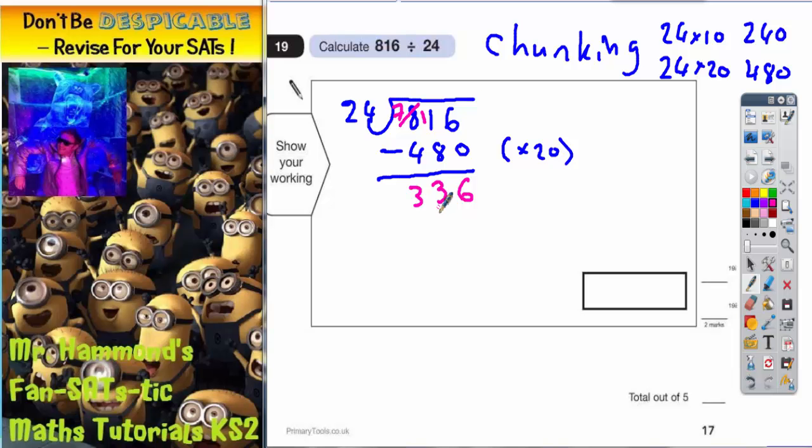Okay, so now I need to subtract some more chunks of 24. Now I can't do 20 lots of it this time because I've only got 336 left and 480 is too big, but I can do 10 lots, so let's now subtract 10 lots. Now we already know that 10 lots of 24 is 240.